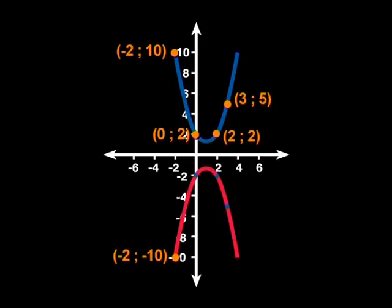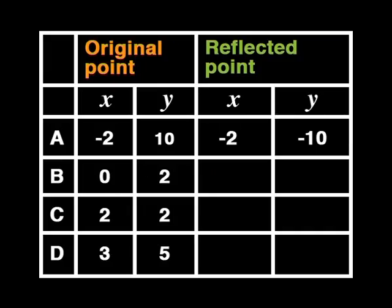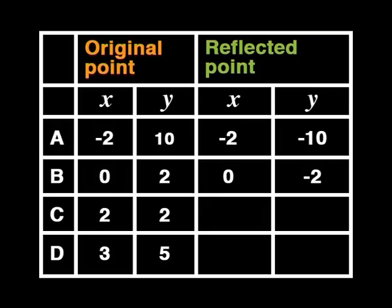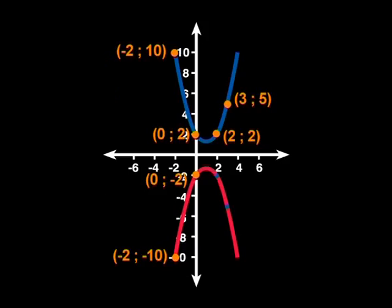Okay, the point that was minus 2 and 10 is now minus 2 and minus 10. Have you got that, Saboho? Yes. What happens to the point that was 0 and 2? That is now 0 and minus 2.